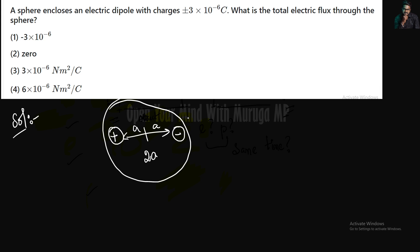There is a sphere with a charge. One is plus charge, and this is minus charge. We will talk about the value of the charge: plus or minus 3 × 10⁻⁶ coulomb. What is the total electric flux through the sphere?